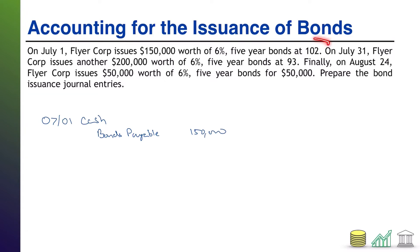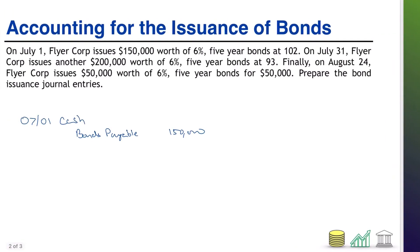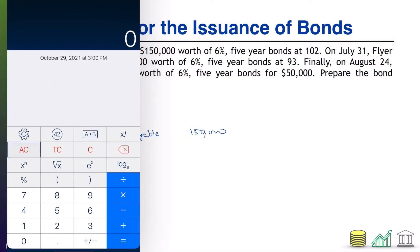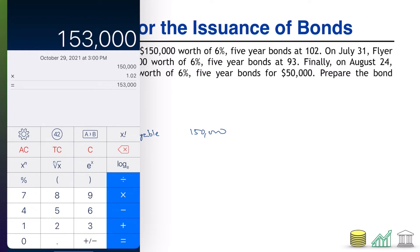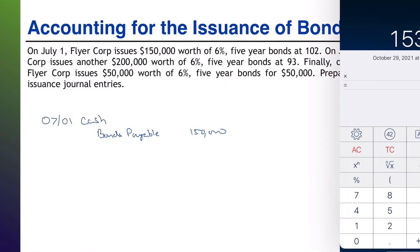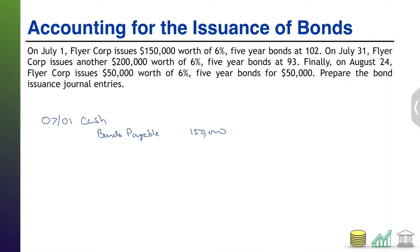Now, it says that they were issued at 102. That is a market quote representing a percentage of the face value of the bond. So if we pull out the calculator: $150,000 times 1.02 — that means the cash we're receiving is actually $153,000.